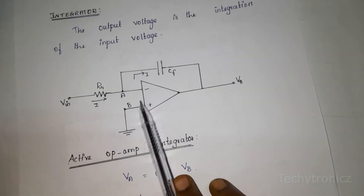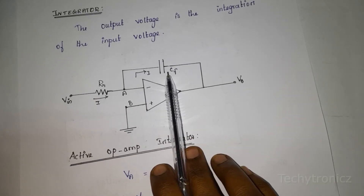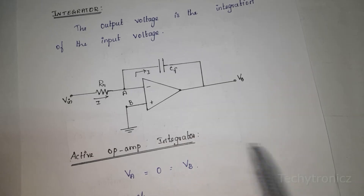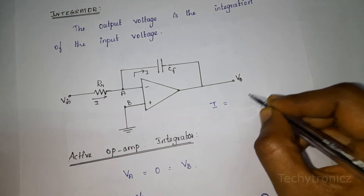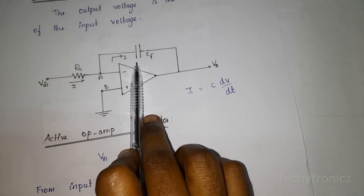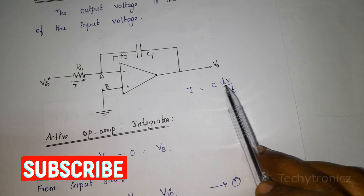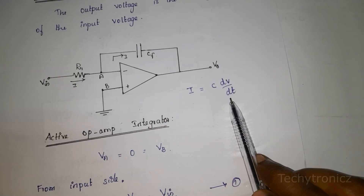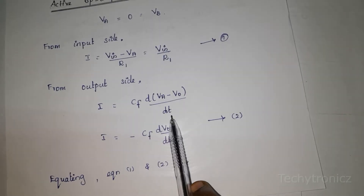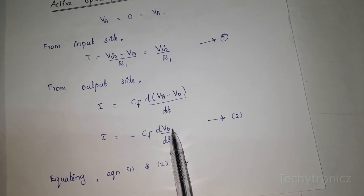From the output side, we are going to calculate the current value. Current I is flowing through the capacitance. One end of the capacitance is connected to VA and the other end is connected to output voltage V_naught. The capacitance current is I equals C times dV divided by dt. So the current value here is I equals Cf times d(VA minus V_naught) divided by dt. Since VA equals 0, we get I equals minus Cf times dV_naught divided by dt.